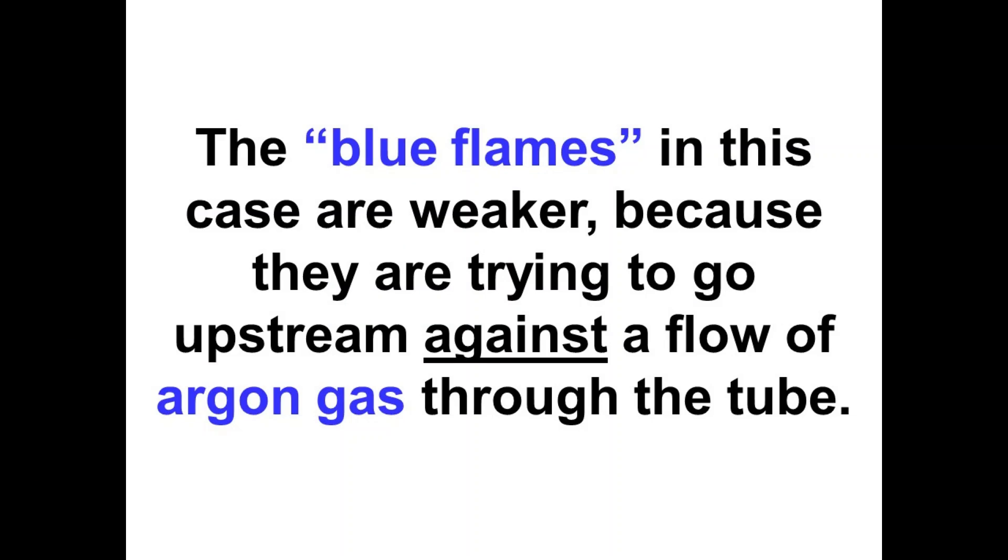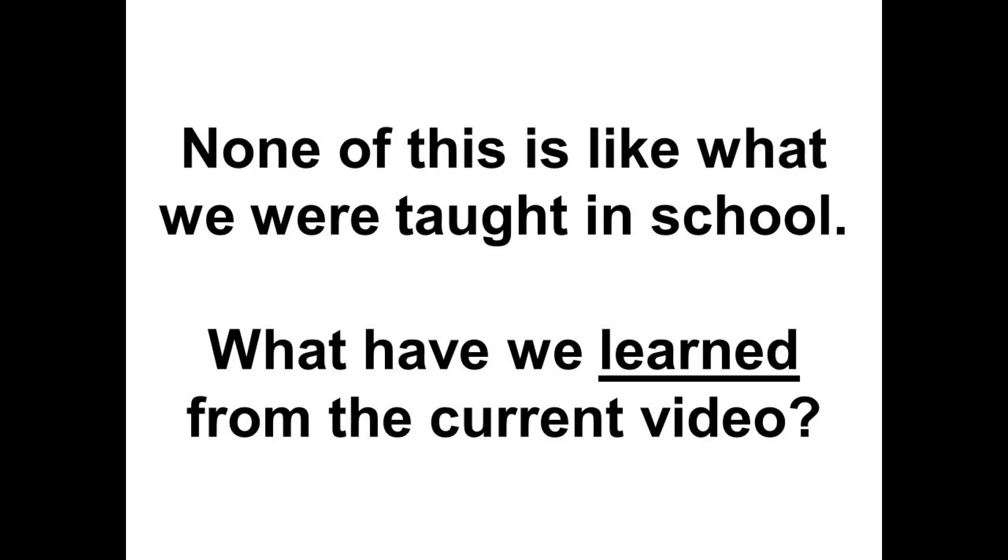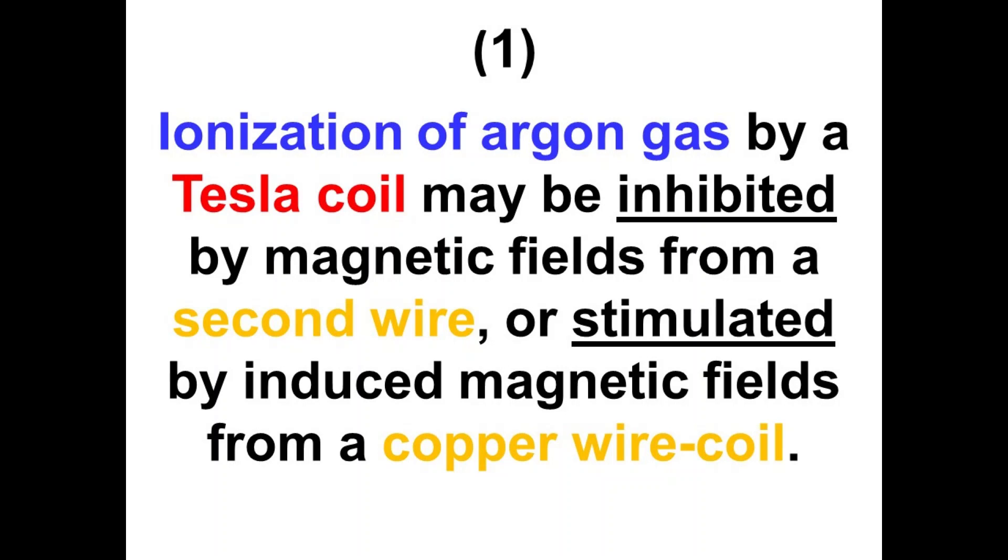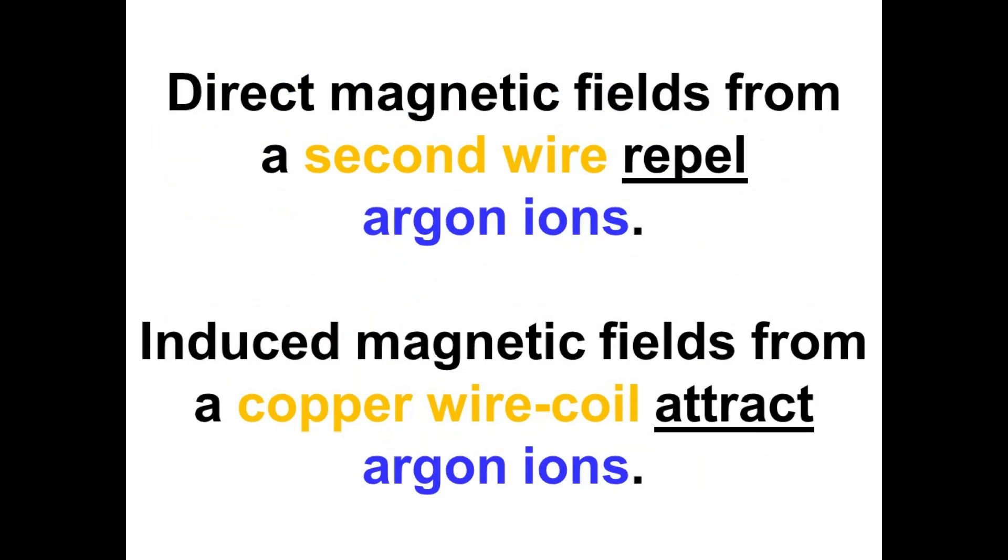The argon gas is going from right to left. Now with this reversed arrangement you can clearly see the argon gas wants to flow left to right away from the aluminum plate and out of the copper wire coil, upstream against the flow. On the other side absolutely nothing's coming out, so the arrangement of the aluminum plate and the copper wire coil tell you in which direction the ionized argon gas wants to flow.